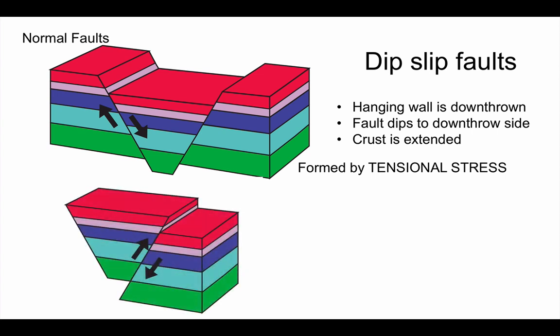If we contrast that fault with the second block diagram, you'll notice this one is different. This is a type of fault we call a reverse fault. Now a reverse fault, we see here the hanging wall, the block above the fault plane, has been upthrown. So the fault is dipping towards the upthrow side of the fault.